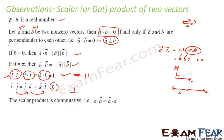Scalar product is commutative — A dot B is equal to B dot A, anyway they are scalars. So whether you say A dot B or B dot A, you will get the same answer. But this will not be true for the next kind of product — vector product — I will show you that.